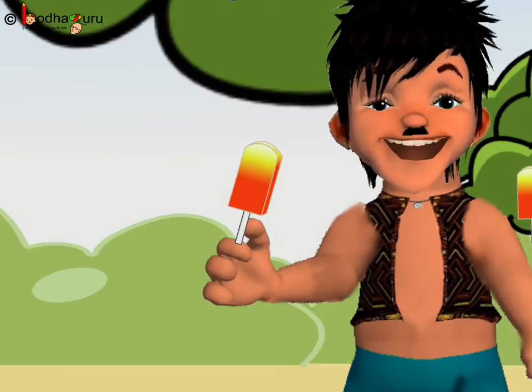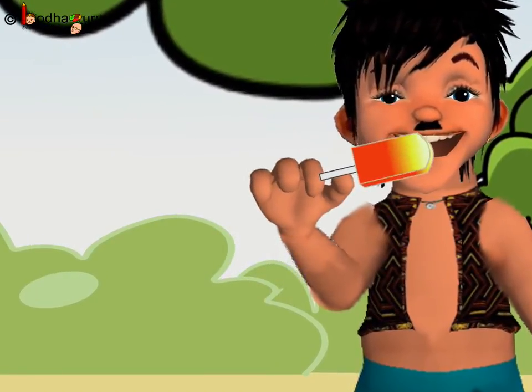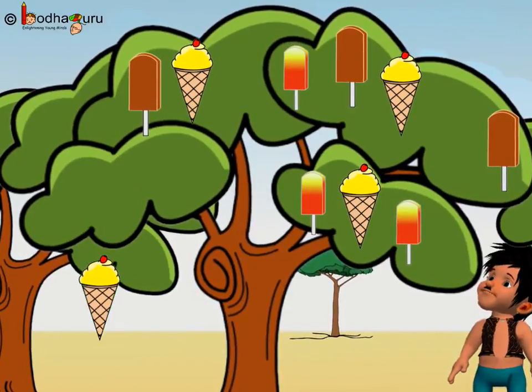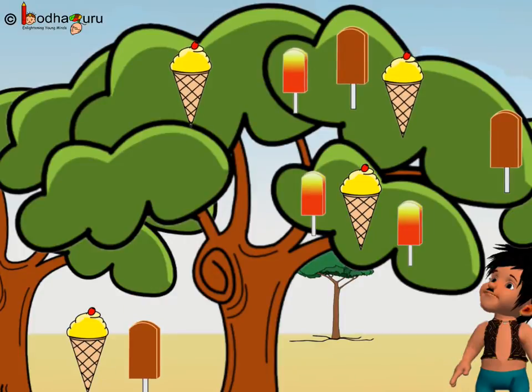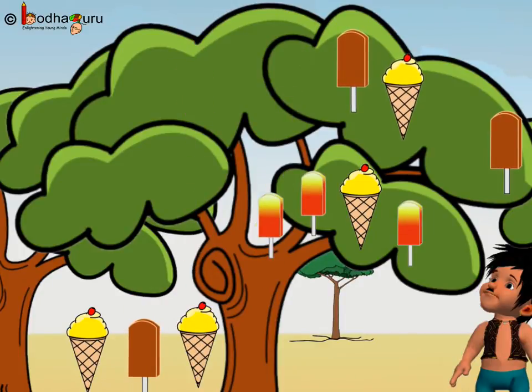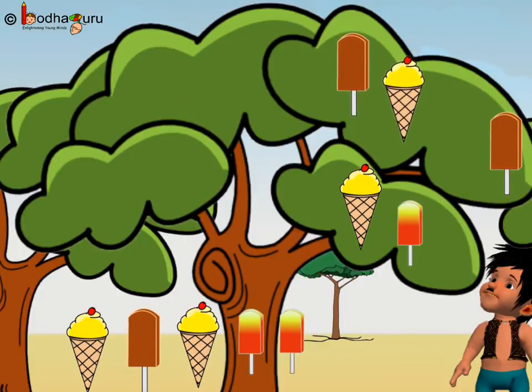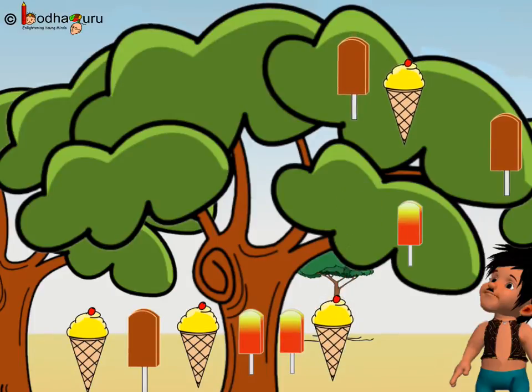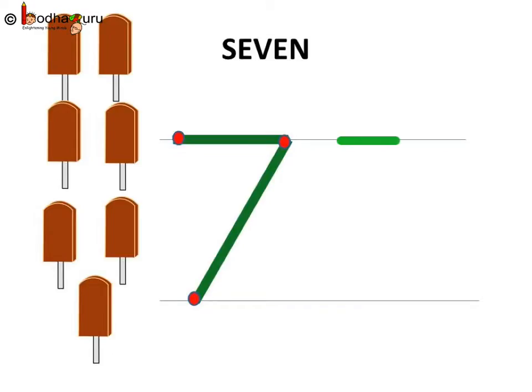That too his favorite orange bar. One. One. Two. Three. Four. Five. Six. Seven. Seven. Seven ice creams.